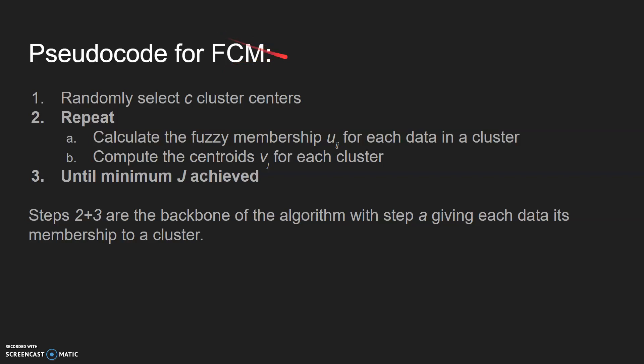This basically means that the centroids for each cluster don't make a significant distance change. Steps two and three are basically the backbone of the algorithm, which gives each data point its membership.